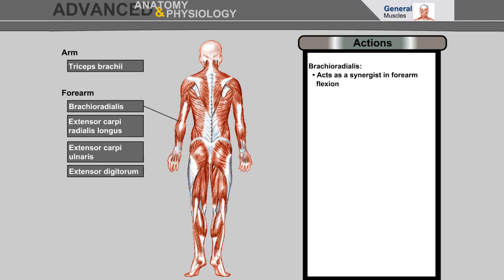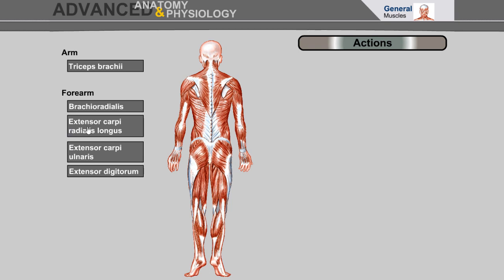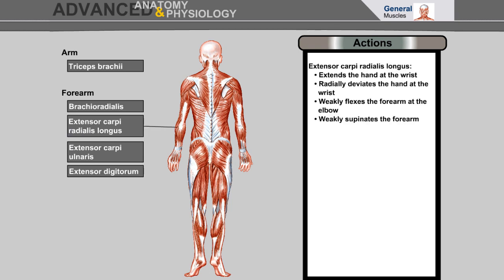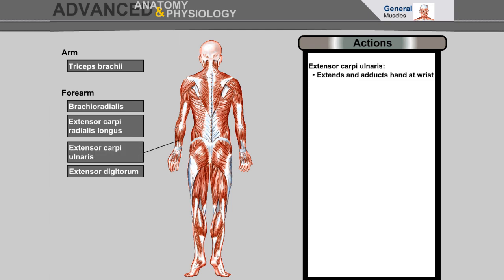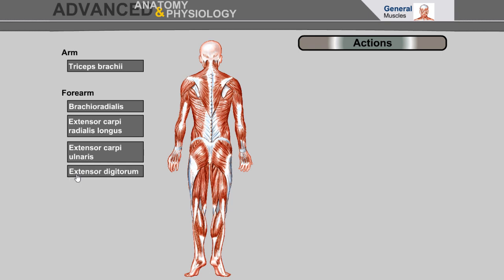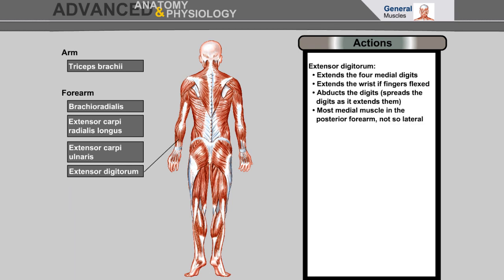Brachioradialis acts as a synergist in forearm flexion. Extensor carpi radialis longus extends the hand at the wrist, radially deviates the hand at the wrist, weakly flexes the forearm at the elbow, and weakly supinates the forearm. Extensor carpi ulnaris extends and adducts the hand at the wrist. Extensor digitorum extends the four medial digits, extends the wrist if the fingers are flexed, abducts the digits, and is the most medial muscle in the posterior forearm.